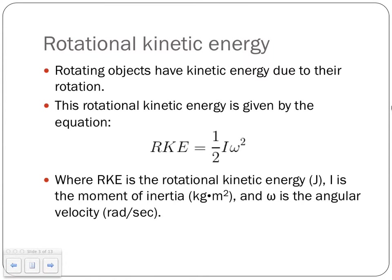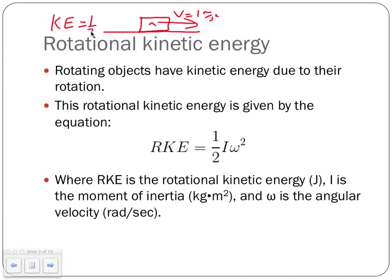We talked about before how objects have kinetic energy due to their motion. We've done cases where we've had a box that's sliding at some speed with some mass, and we'd say the kinetic energy of that would be one-half mv squared as our kinetic energy. But that's kinetic energy in a linear direction.